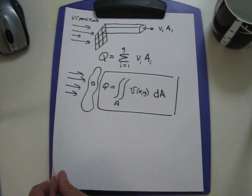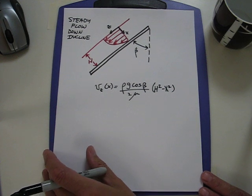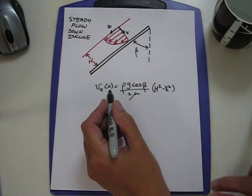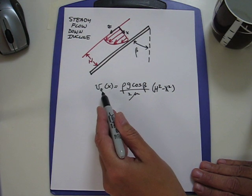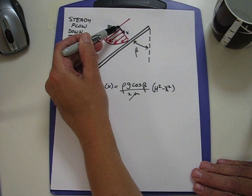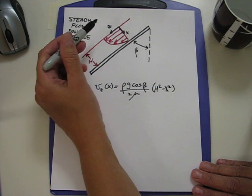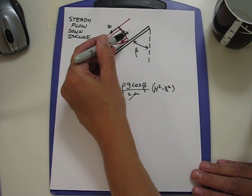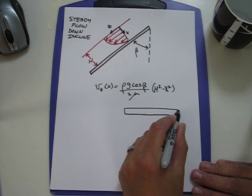We can make this more solid by considering a real example. Let's consider the example we're studying in class, which was flow down an incline plane. This is a problem where we've solved it completely for the velocity field in class, and we have a Newtonian fluid flowing steadily down an incline. The velocity varies in the x direction and is not a function of the y or z direction. This is exactly the case we just talked about.